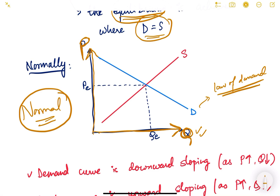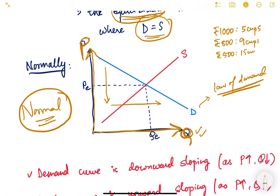For example, if one cup of ice cream costs ₹1000, say only 5 people demand it. If the price reduces to ₹800, demand rises to 9 cups. At ₹500, demand rises to 15 cups, and at ₹100, demand rises to 30 cups. So intuitively, as price reduces, quantity demanded increases — that is why the demand curve is downward sloping.